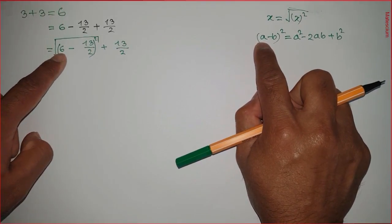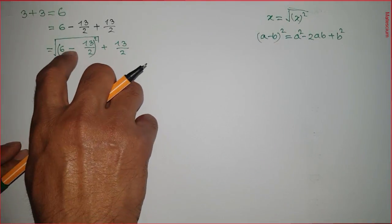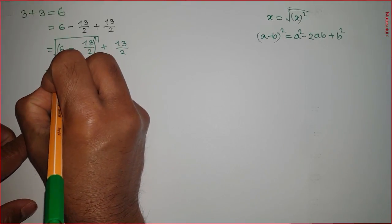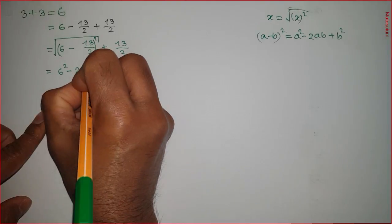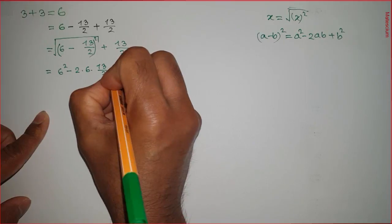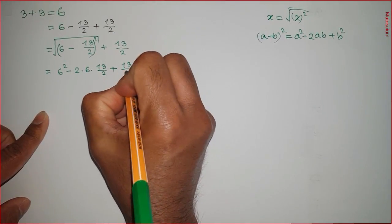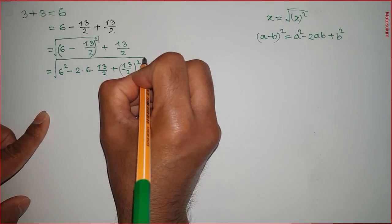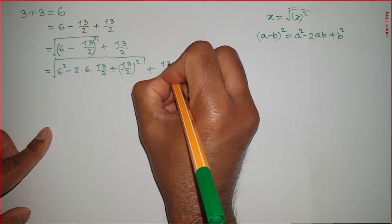I can substitute a by 6 and b by 13 over 2. That means this statement is substituted by (a minus b) whole square, so I can write this as 6 squared minus 2 times 6 times 13 over 2, plus b squared which is (13/2) whole square. This part is covered by the square root, plus 13 over 2 exactly here.